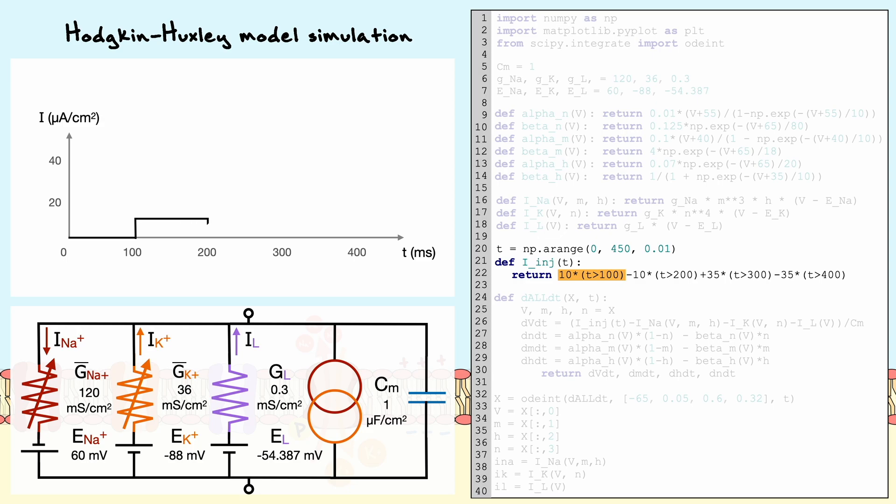As the time surpasses 100 milliseconds, the first condition will be met and a current of 10 microamperes per centimeter square will be sent. Then, after 200 milliseconds, the current will stop due to the second condition.